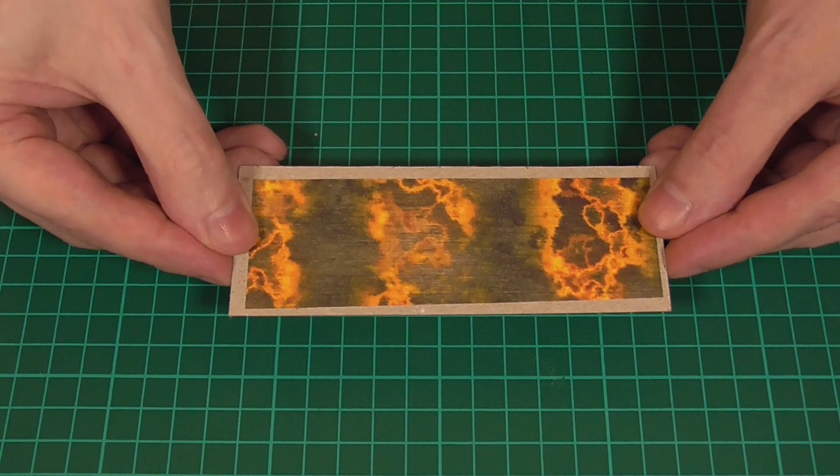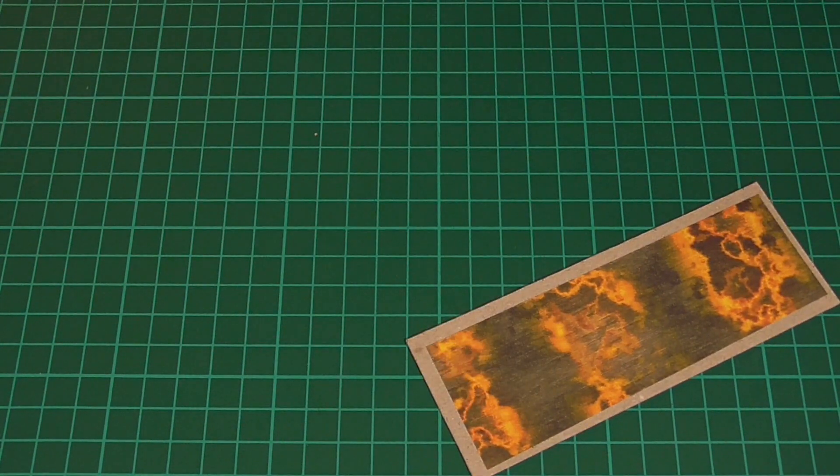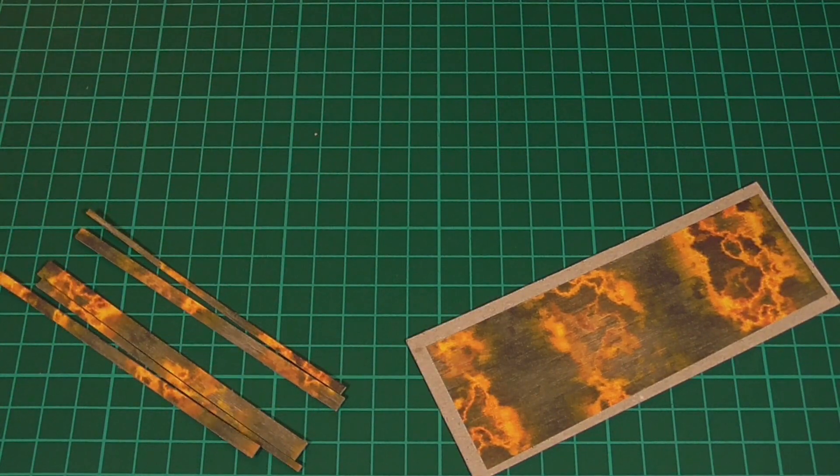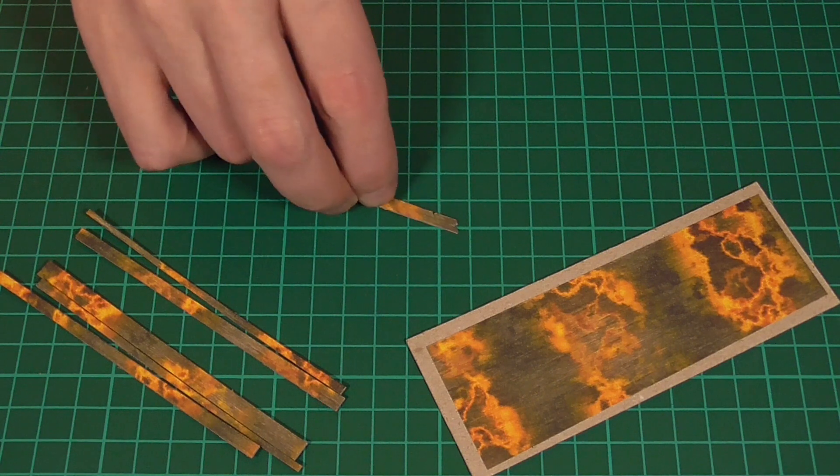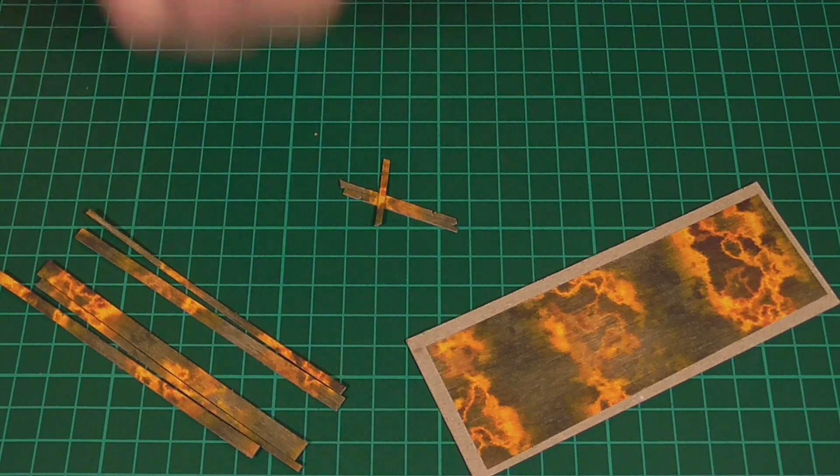So speaking of other uses, we can also take this burning wood texture and glue that to some thick card. All we're going to do with this is cut it into a couple of different size strips, which we can then make into little bits of splintered wood.